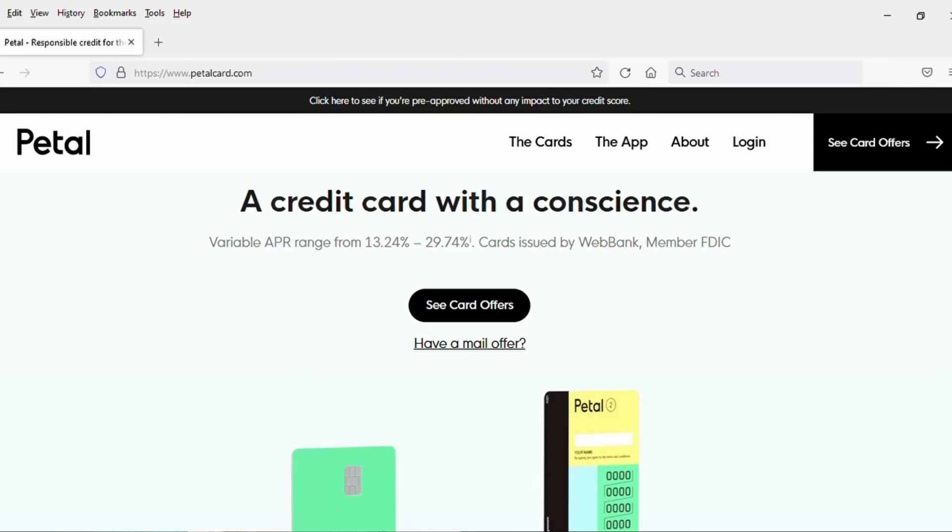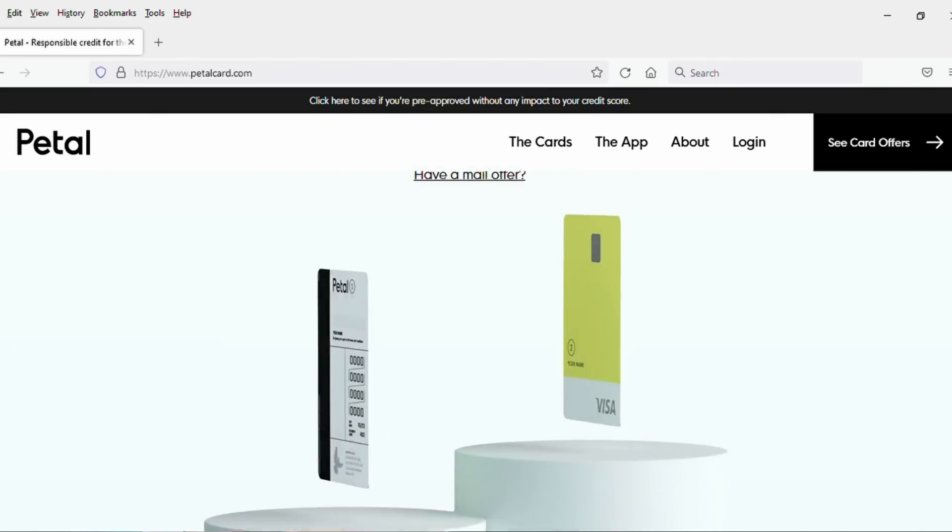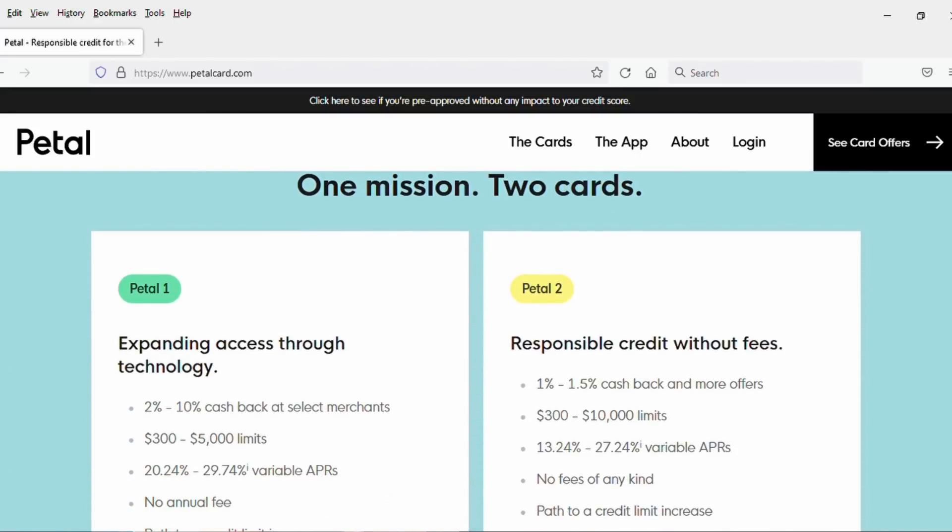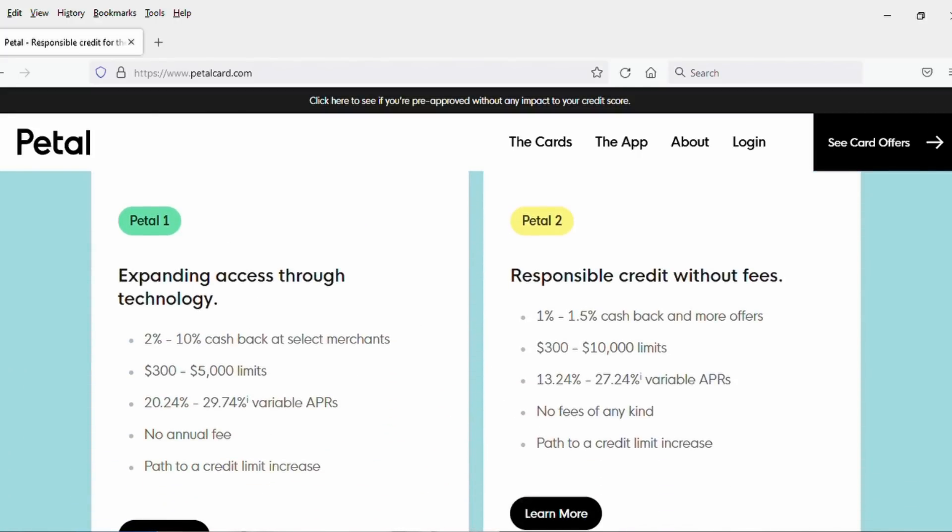We're going to move on to travel rewards cards that are Visa branded in a second, but I want to give a quick shout out here to the Petal Visa cards. The Petal 1 and Petal 2 Visa cards are geared toward people that are either new to credit or maybe have had some past credit problems and are rebuilding their credit or maybe don't have much credit and are trying to get it built further. Some decent rewards and some cards that maybe are a little easier to get qualified for than some of the other cards we talk about. All right, now let's get into travel credit cards that are Visa branded. I'm going to start with the sort of higher-end luxury travel credit cards.